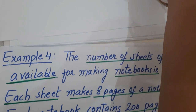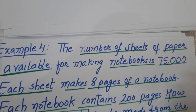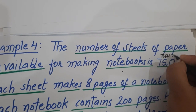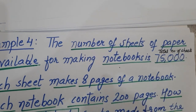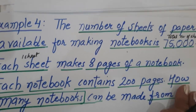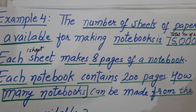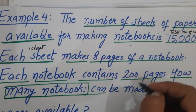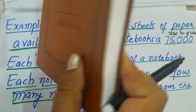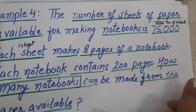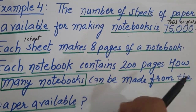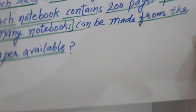So the total number of sheets we have is 75,000, and one sheet can make eight pages of a notebook. We have to make notebooks where each notebook contains 200 pages. With the help of these pages, how many notebooks can be made from the paper available?